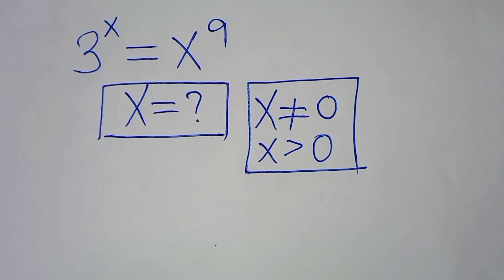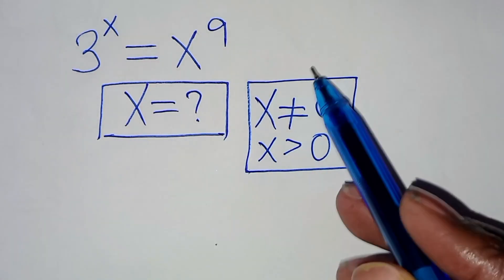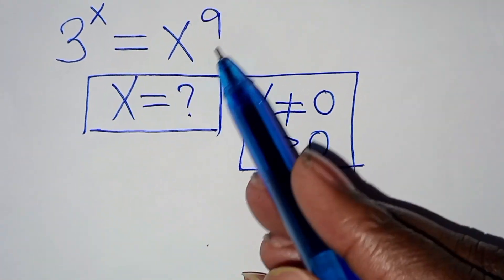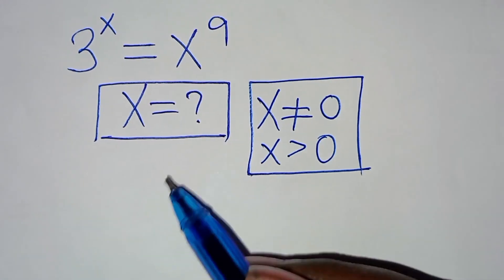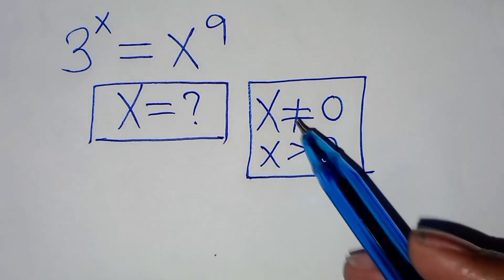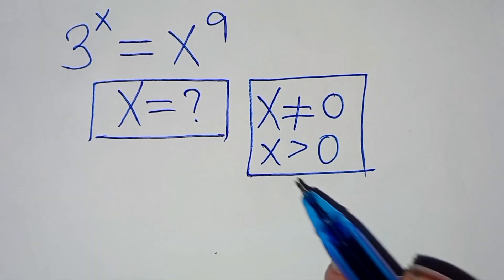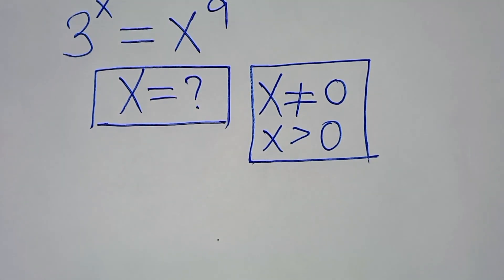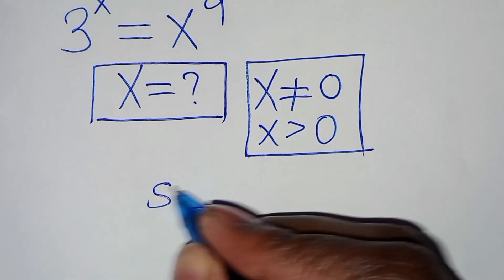Hello everyone, welcome to solve this nice algebra problem: 3 to the power of x is equal to x to the power of 9. What is the value of x, given that x is not equal to zero and x is greater than zero? Now let's present the solution.